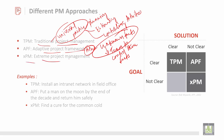Then we have Extreme Project Management, which is also a very important tool. It is a method of managing very complex problems in very uncertain projects. It is very flexible and manages through emotions, thoughts, and interactions to produce the desired outcomes.